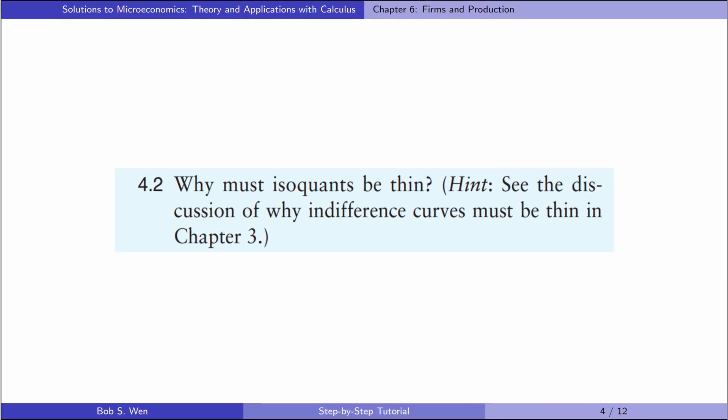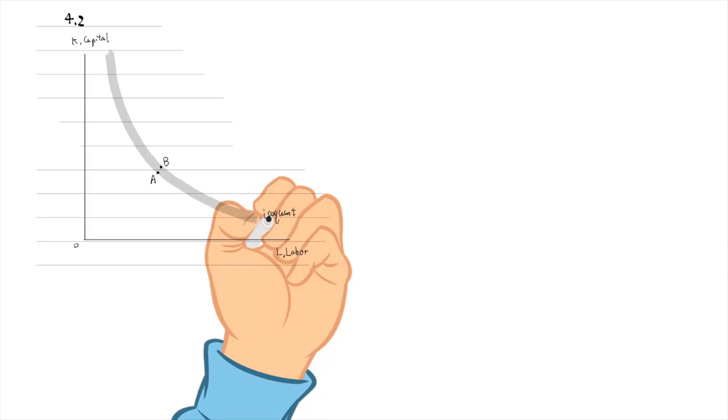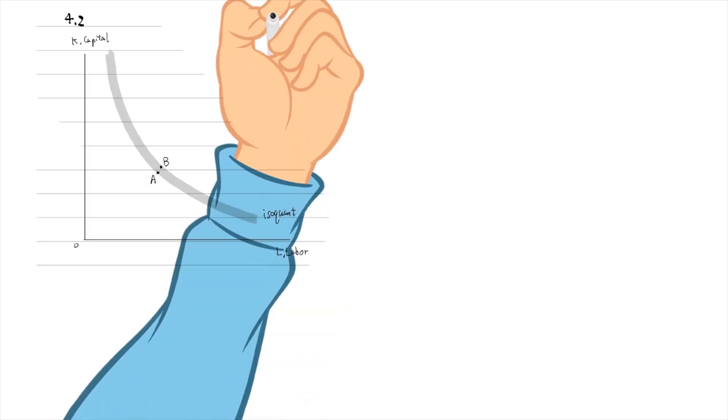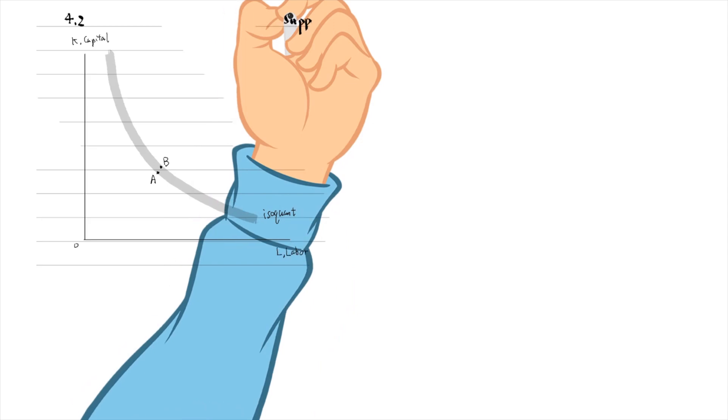Let's find answers to exercise 4.2: why must isoquants be thin? Suppose an isoquant is thick.